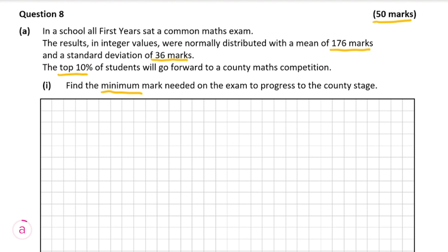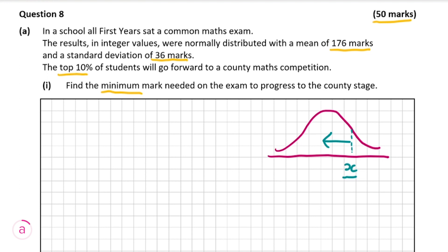We want to find the boundary between the top 10% and the bottom 90%. I'd always recommend trying to visualize it. Looking at this normal distribution drawn in red on the right, we're looking for some mark x such that 90% of students lie below this mark. So this mark x is the boundary between the top 10% and the bottom 90%.